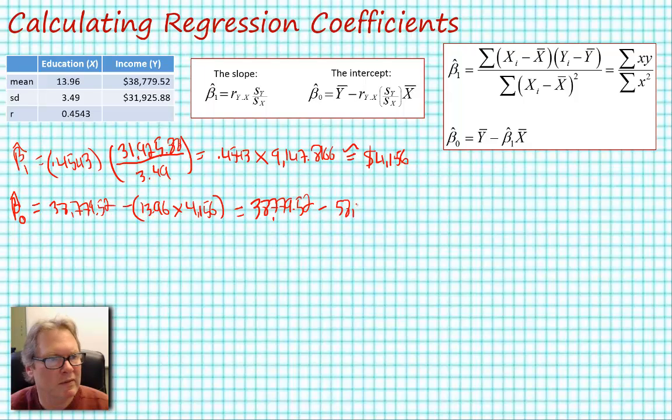this value, and finally this is equal to minus $19,236.